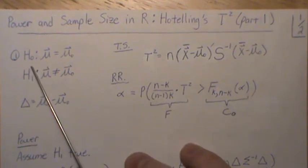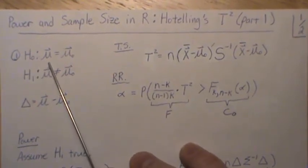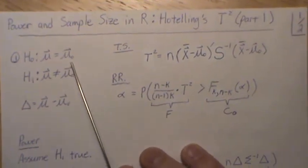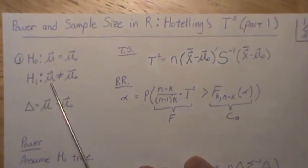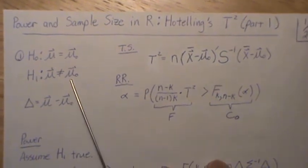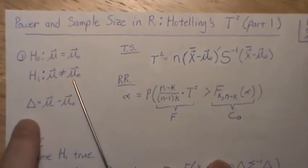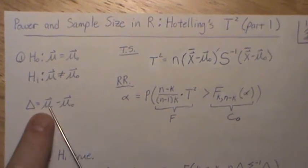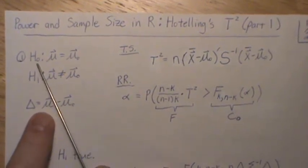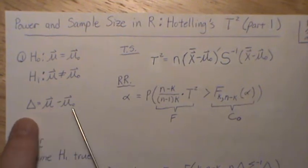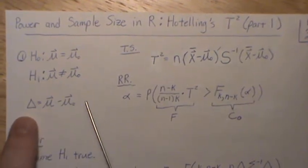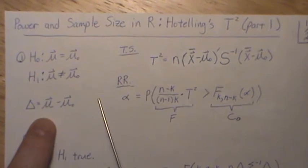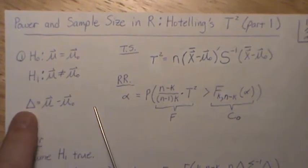Okay, so here the null hypothesis is: is our mean vector equal to some constant vector, or is our mean vector not equal to that? And then we're going to call delta this shift. If these, under the null hypothesis, if these two are equal, then we get the zero vector. If they're not, then we get some sort of shift, and that shift we call delta.